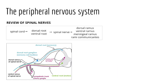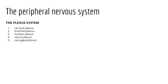Recall that spinal nerves form from dorsal and ventral roots branching from the spinal cord, which then merge to create the mixed spinal nerve. Understanding spinal nerves is only half the picture; we also need to study the plexus system.